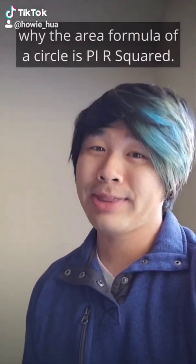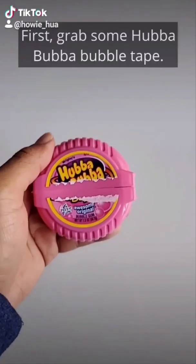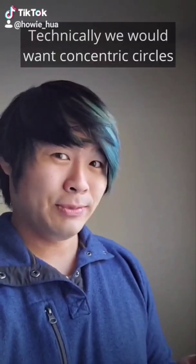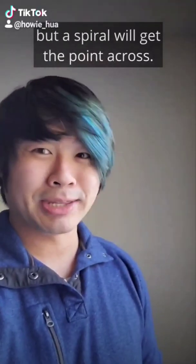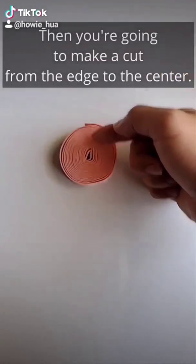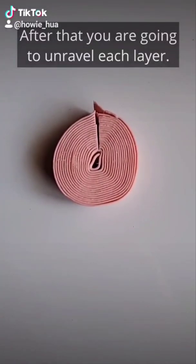Here's another way to show why the area formula of a circle is pi r squared. First, grab some hubba bubba bubble tape. Technically, we would want concentric circles, but a spiral will get the point across. Then you are going to make a cut from the edge to the center. After that, you are going to unravel each layer.